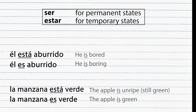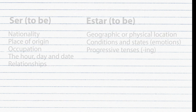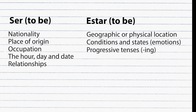Another example: 'La manzana está verde' means the apple is unripe — a temporary state using ESTAR. 'La manzana es verde' means the apple is green in color — a more permanent state using SER. SER is used for nationality, place of origin, occupation, time and dates, and relationships. ESTAR is used for geographic or physical locations, temporary conditions and emotions, and progressive tenses.